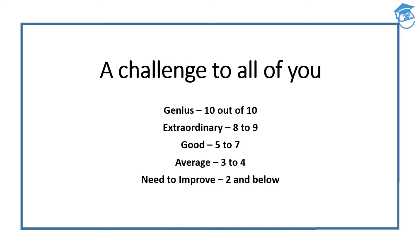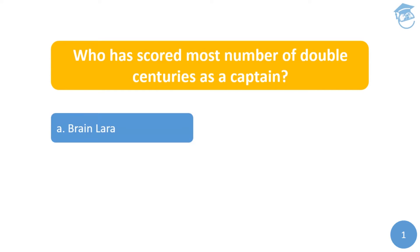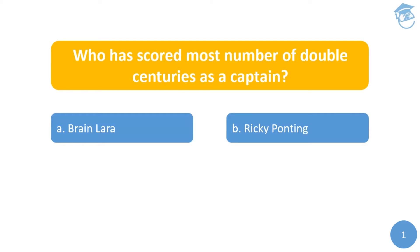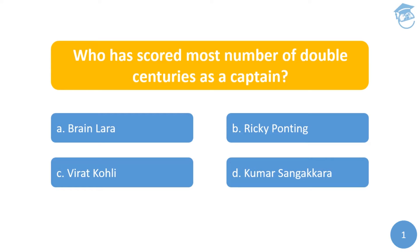Let's move on to the first question straight away. Who has scored the most number of double centuries as a captain? Your options are: A) Brian Lara, B) Ricky Ponting, C) Virat Kohli, or D) Kumar Sangakkara. You have five seconds to answer.